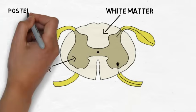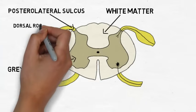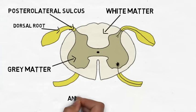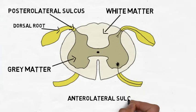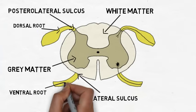There is a small groove called the posterior lateral sulcus where dorsal roots enter the cord carrying sensory information. There is another groove that is not very distinct on the front of the cord called the anterior lateral sulcus. Ventral roots leave the cord from the anterior lateral sulcus to carry motor information to the muscles.